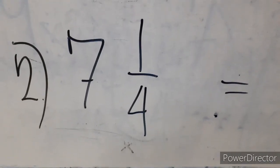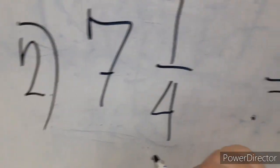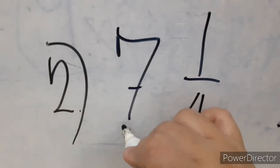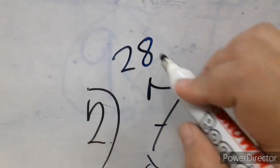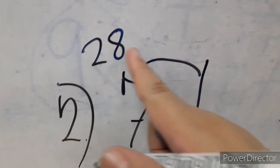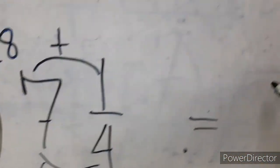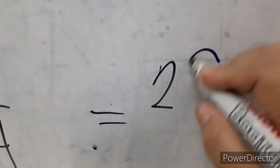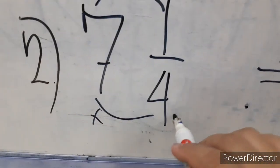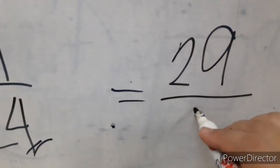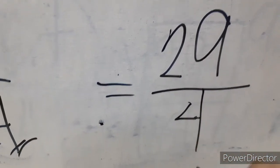Another example: we have 7 and 1 fourth. First, we multiply. 7 times 4 is 28. Next is to add. 28 plus 1, we have 29. Our new numerator is 29. Over — we simply copy the denominator, 4. So the answer is 29 fourths.